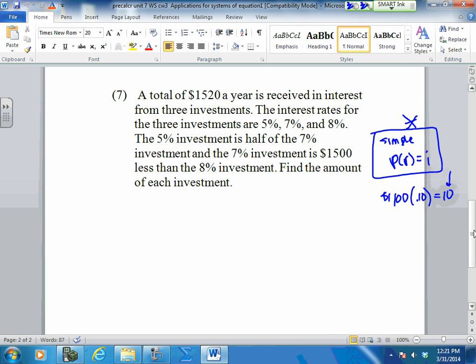So this problem says a total of $1,520 a year is received in interest. In interest, that means it came from this guy right there, from three investments. The interest rates are 5%, 7%, 8%. The 5% investment is half of the 7%, and the 7% is $1,500 less than the 8%. Find the amount of each investment. How many investments do we have? Three. Therefore, how many variables do we have? Three.